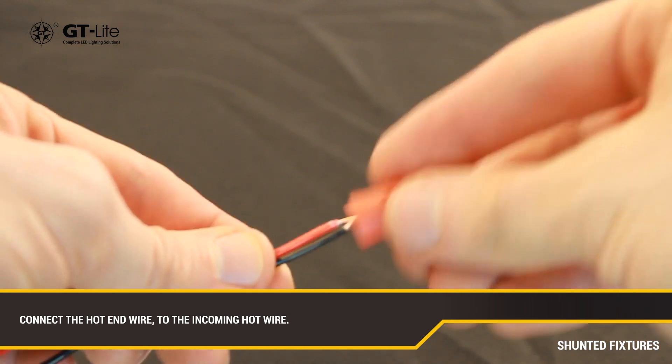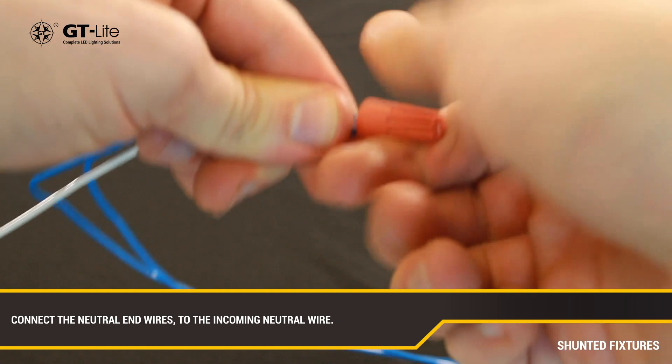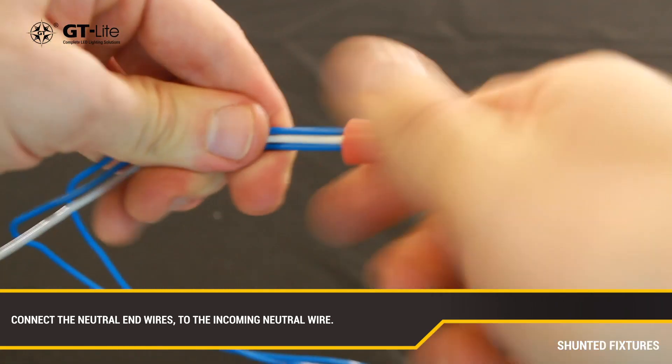Connect the wires leading to the hot side of the fixture to the black incoming wire and then connect the wires leading to the neutral side of your fixture to the white incoming wire.